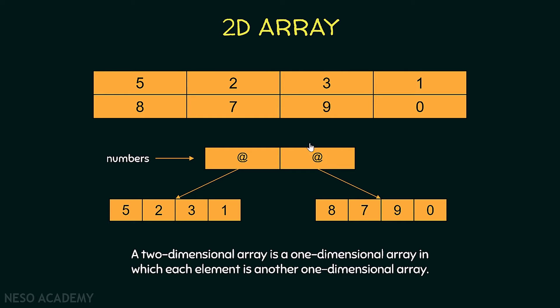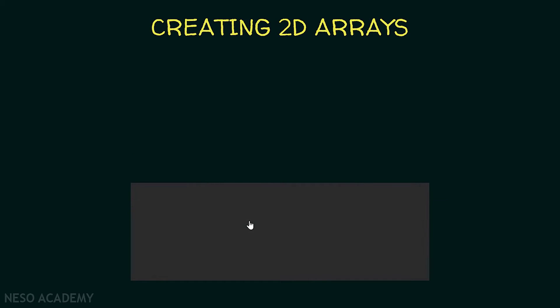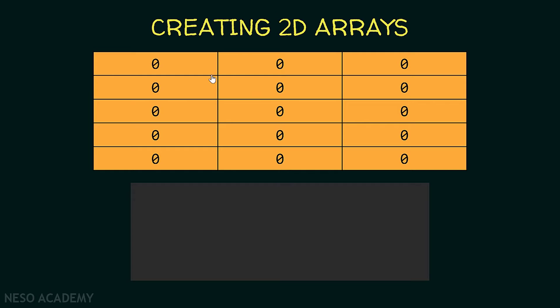So a two-dimensional array is a one-dimensional array in which each element is another one-dimensional array. As you can see this is a one-dimensional array, and each element is a one-dimensional array. Now let's talk about creating a two-dimensional array. Suppose that we want to create this table over here — we want to create a two-dimensional array. First of all, it is an array of integers.